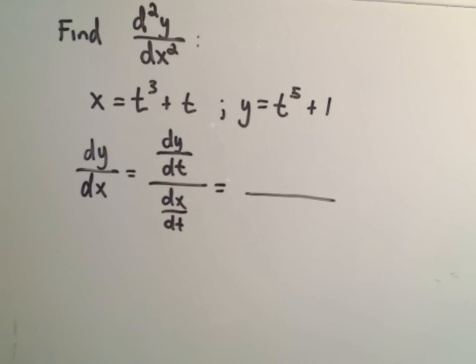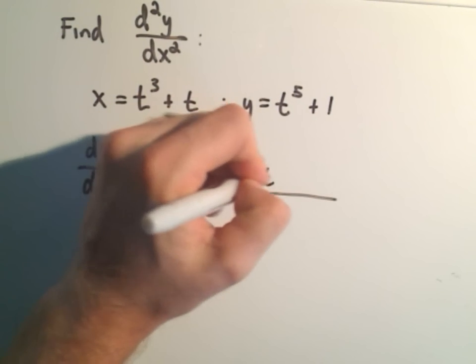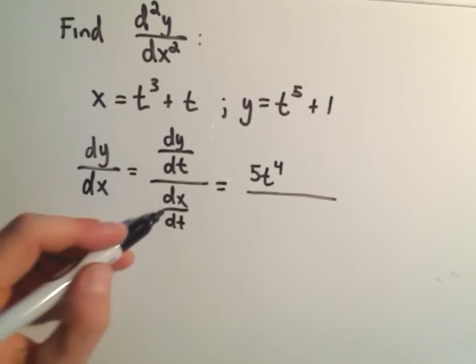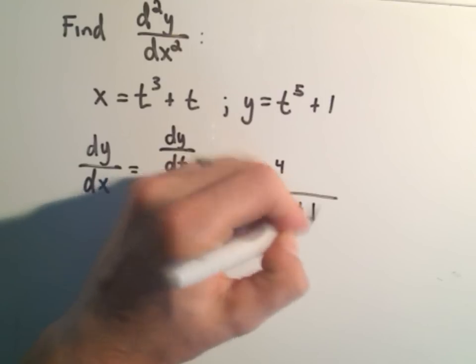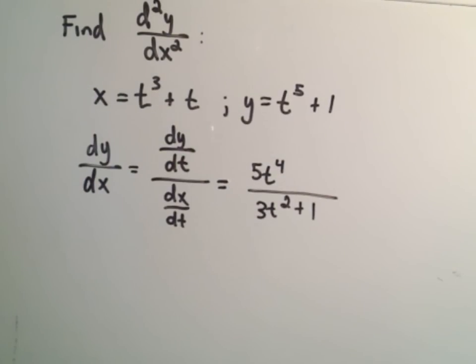The derivative of x with respect to t would be 3t squared plus 1. Alright, easy enough. So that's our dy dx.